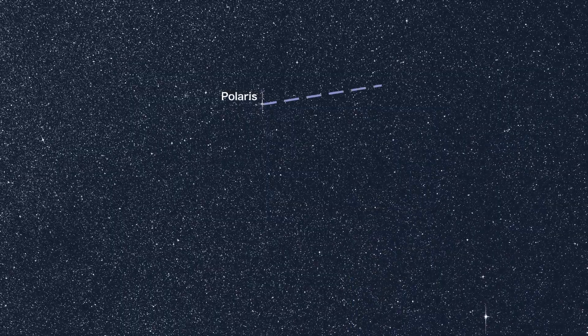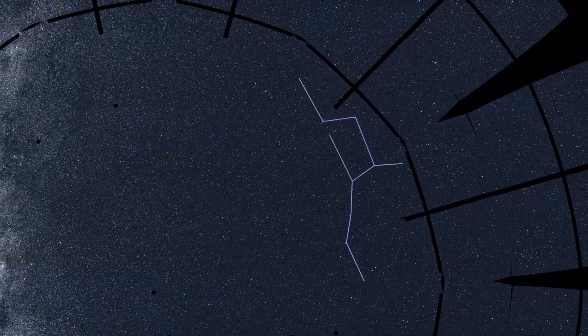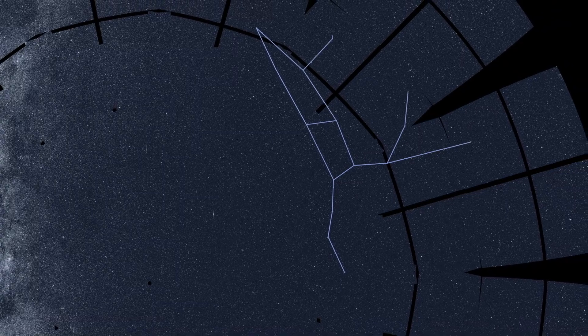To find Polaris, follow a line set up by these two stars in the cup of the Big Dipper. It's an easily recognized star pattern that forms the central part of the large constellation Ursa Major.